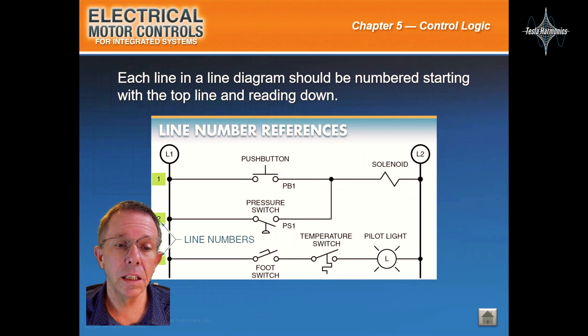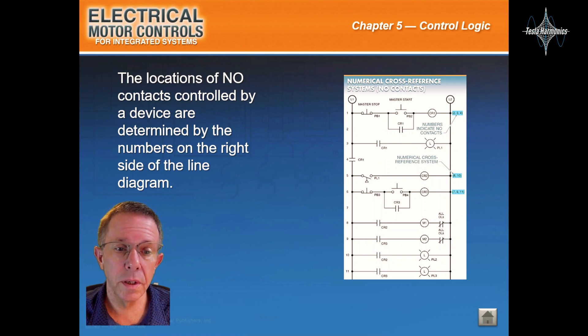Each line in a line diagram should be numbered starting with the top line and leading down. The locations of normally open contacts controlled by a device are determined by the numbers on the right side of the line diagram.